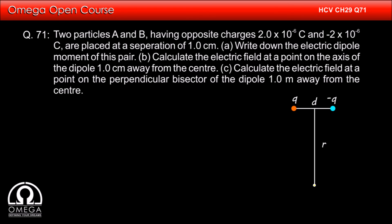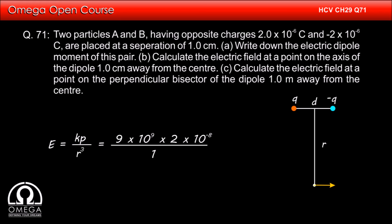In part C, the point is at a distance of 1 meter on the equatorial plane of the dipole. The formula for electric field in that case is kp/r³. Putting in the values: 9×10⁹ × 2×10⁻⁸ divided by 1, that is 180 volts per meter.